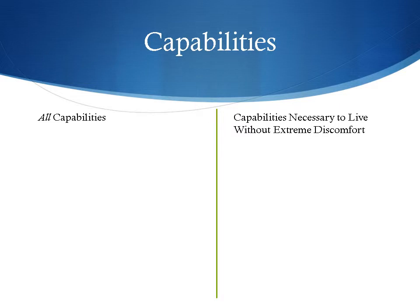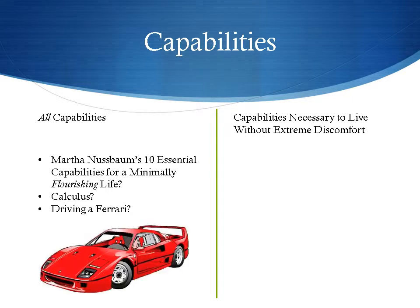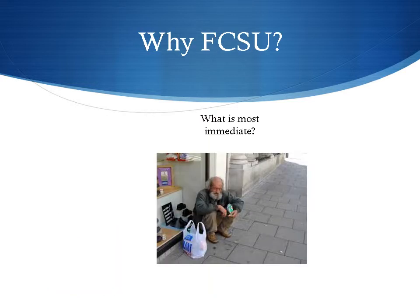Capabilities is admittedly a vague term. Should we consider someone impoverished because they lack the capability to do complex calculus or drive a Ferrari? We believe poverty should be measured in terms of an individual's capabilities to meet their basic needs and live a minimally decent life. We will be relatively conservative and concern ourselves with the capabilities that allow individuals and families to obtain their FCSU needs — food, clothing, shelter, and utilities. FCSU needs are the basic capabilities every person should have, and any person without those capabilities needs the most immediate assistance, since their absence has the most profound impact on a person's ability to function in society.